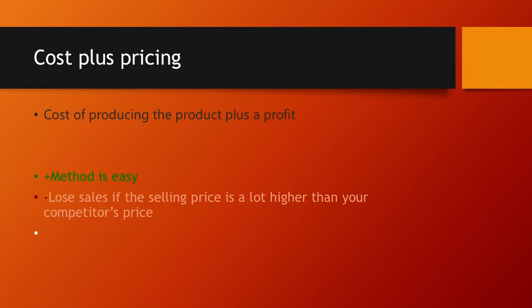Cost plus pricing is when the cost of producing the product — the production cost — is used for the pricing, plus they will add the profit markup, which means the amount of profit they need to make. The advantage of cost plus pricing is that this method is convenient and easy to use, although they can lose sales if the selling price is a lot higher than the competitor's price.